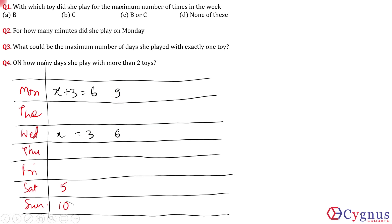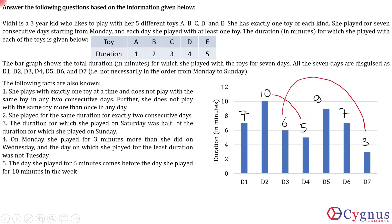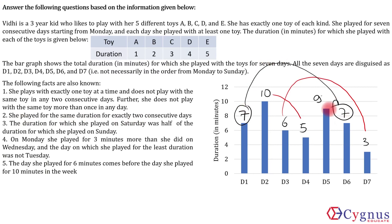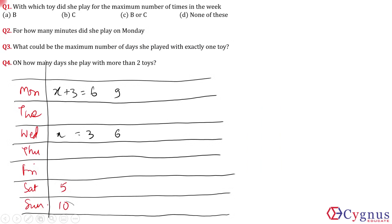Next condition: she played for the same duration on exactly 2 consecutive days. Looking at our values, 7 appears twice, so she played 7 minutes on 2 consecutive days. The only pair of consecutive days available is Thursday and Friday, so both Thursday and Friday are 7 minutes — in both possible cases.